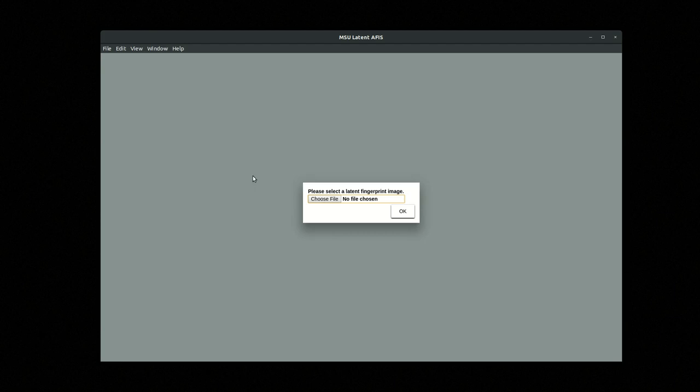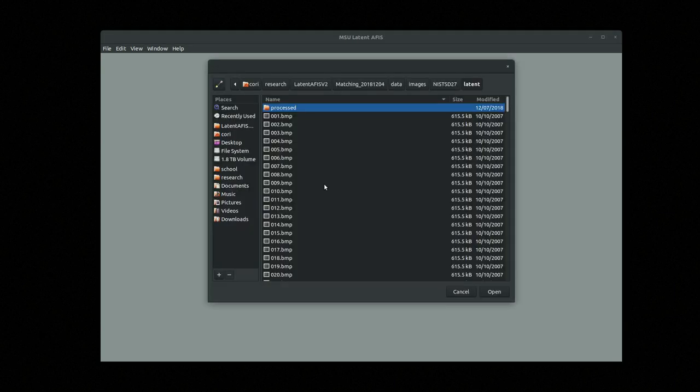There are some other features that are done in the command line, and those will be explained in separate videos. But this interface is just going to handle the most standard use case: just searching one latent query against a gallery of rolled candidates. I'll just quickly note that the software installation is also covered in a separate video, so we are assuming that the software is already installed here. Now when we open it, this is the first screen we see. Like I mentioned, this interface is very simple. We're just going to use this selector to find the latent image that we want to search.